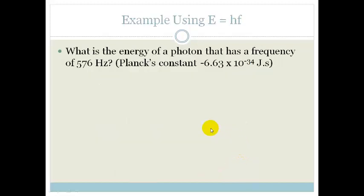So let's look at an example. What is the energy of a photon that has a frequency of 576 hertz? And I've given you here that Planck's constant is 6.63 times 10 to the minus 34 joules per second.